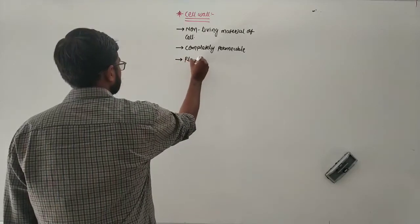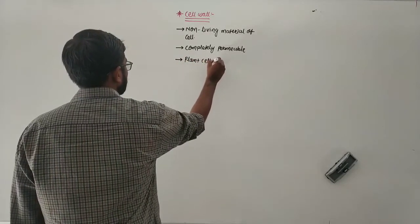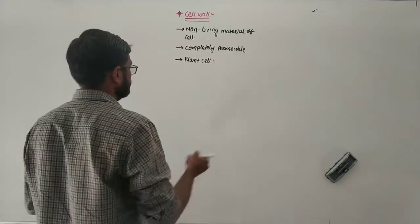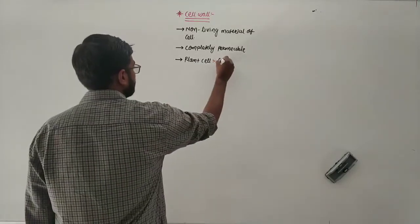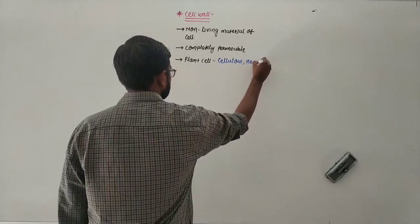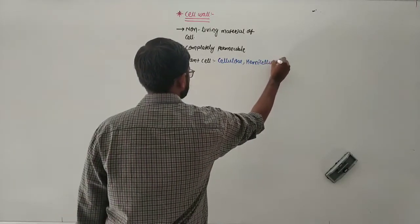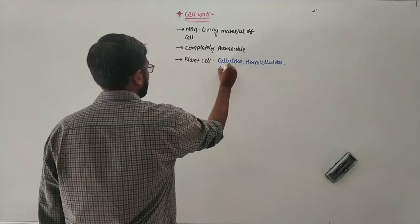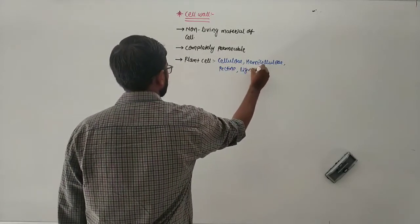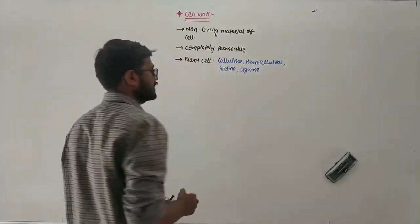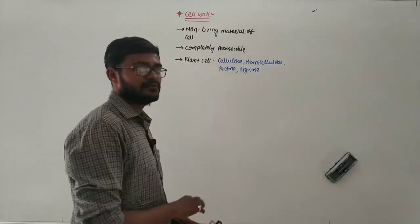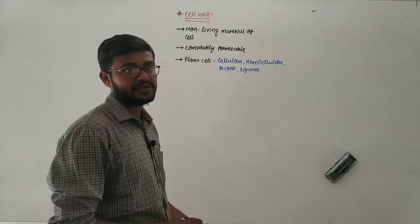The cell wall is present in the case of plant cells. The cell wall of a plant cell is made up of cellulose, hemicellulose, pectin, and lignin. These are all components of carbohydrates and are present within the plant cell.